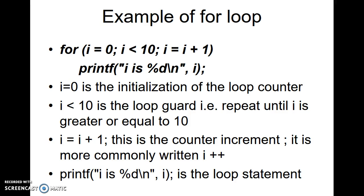Now, here you have an example of a for loop. As you can see from the code written for the for loop and the statement: i=0 is the initialization of the loop counter. i<10 is the loop guard, that is, repeat until i is greater than or equal to 10. i=i+1 is the counter increment; it's more commonly written as i++. Then printf("i is %d\n", i) is the loop statement.